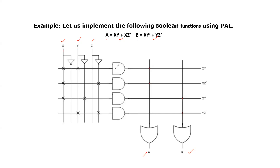Now we have to program these AND gates based on the requirement only. To get the output of the first AND gate, XY, we program input variables X and Y using cross marks. The AND gate output is XY. Next one, XZ' — we program inputs X and Z' for the second AND gate, so the output is XZ'. Similarly for B: XY', we program inputs X and Y'. Next one is YZ' — this is Y and Z'. So these are the required product terms obtained from the programmable AND gates.